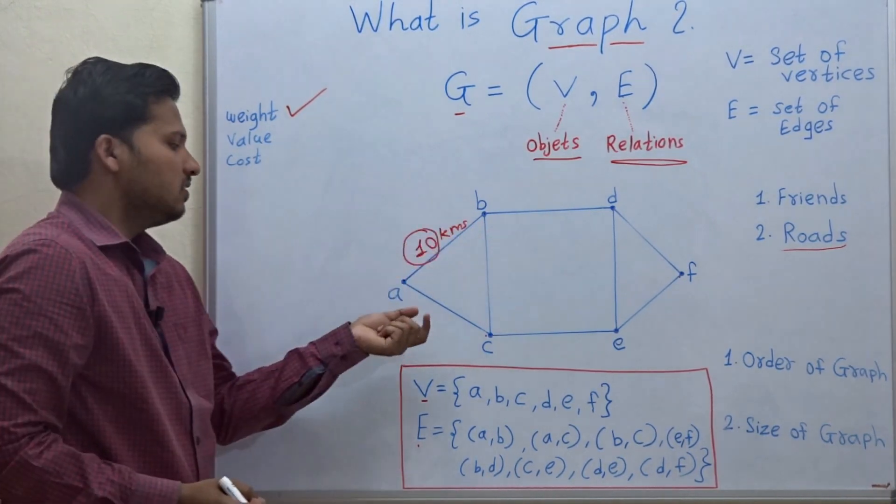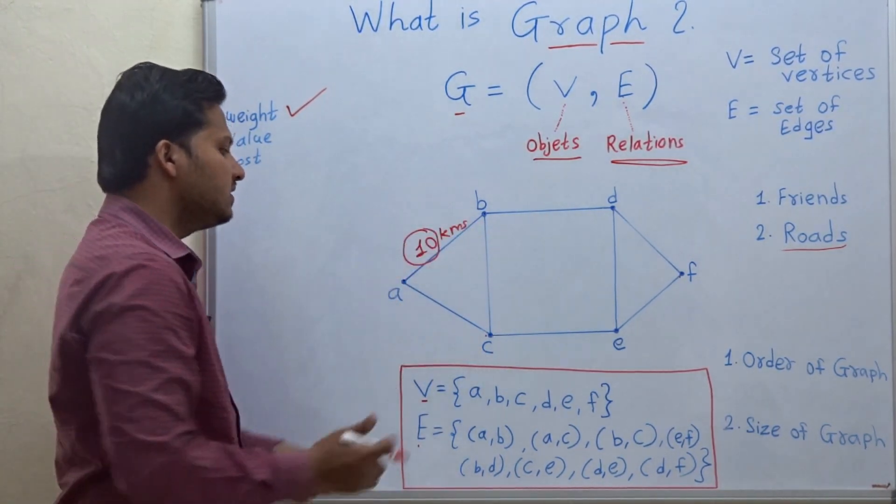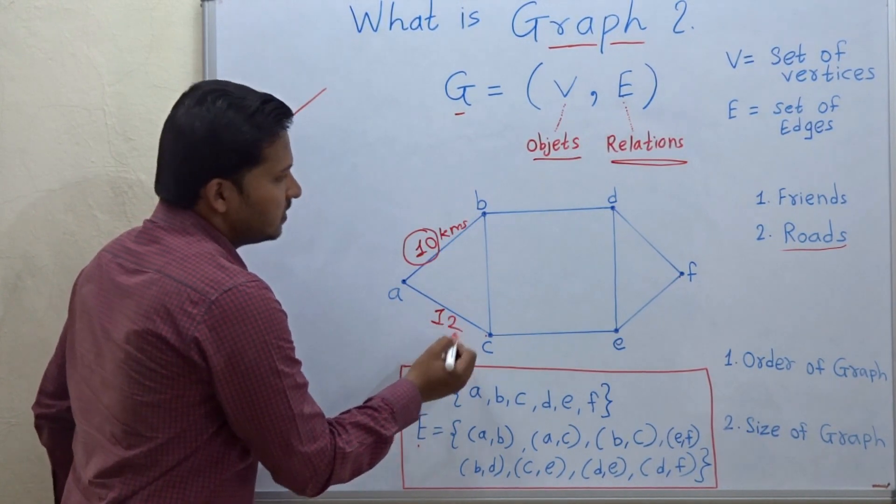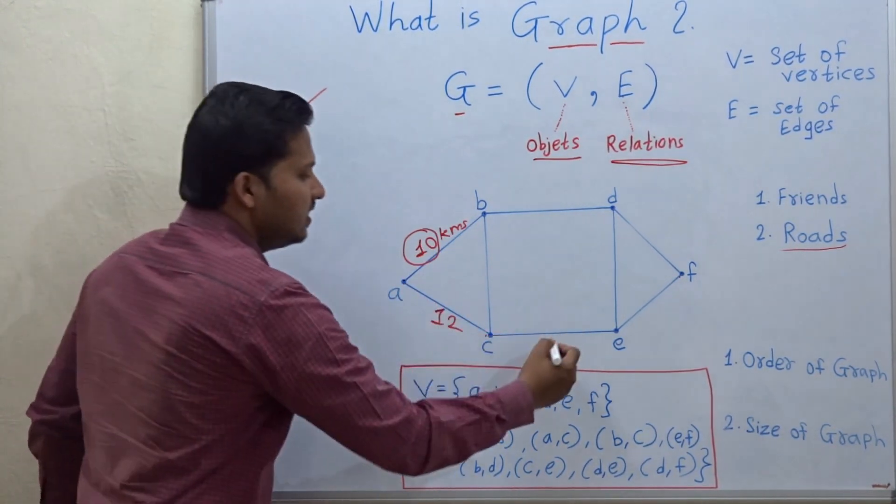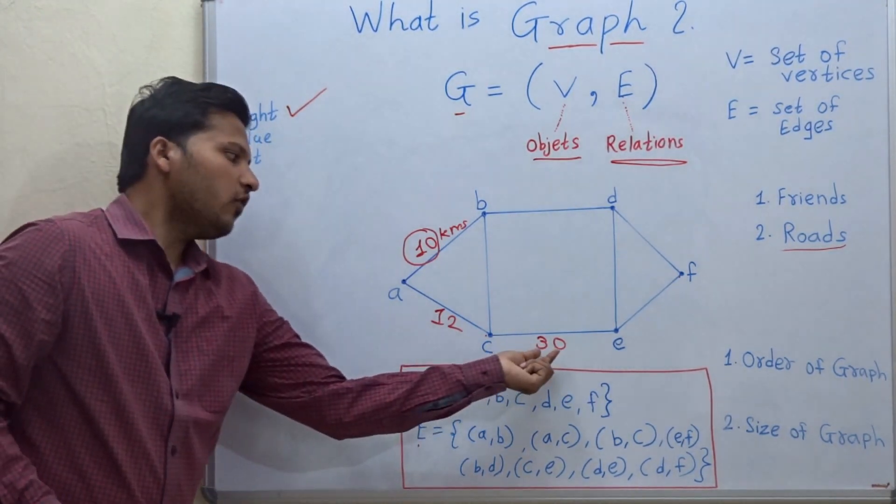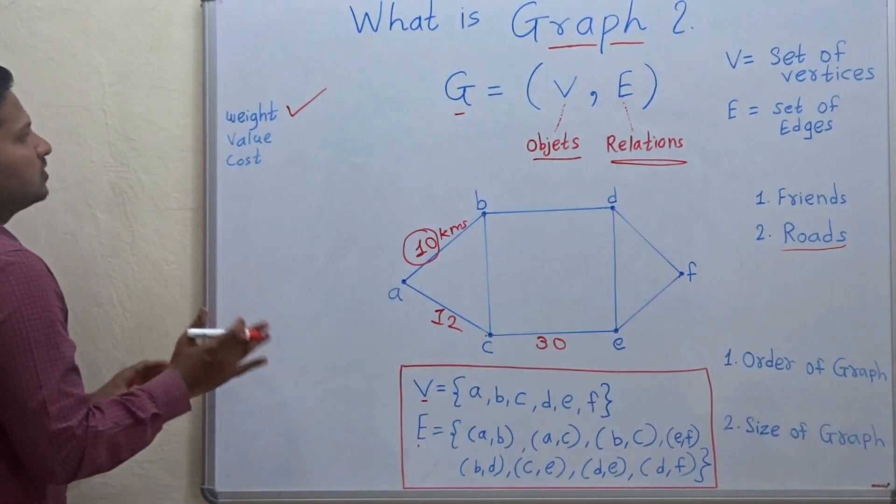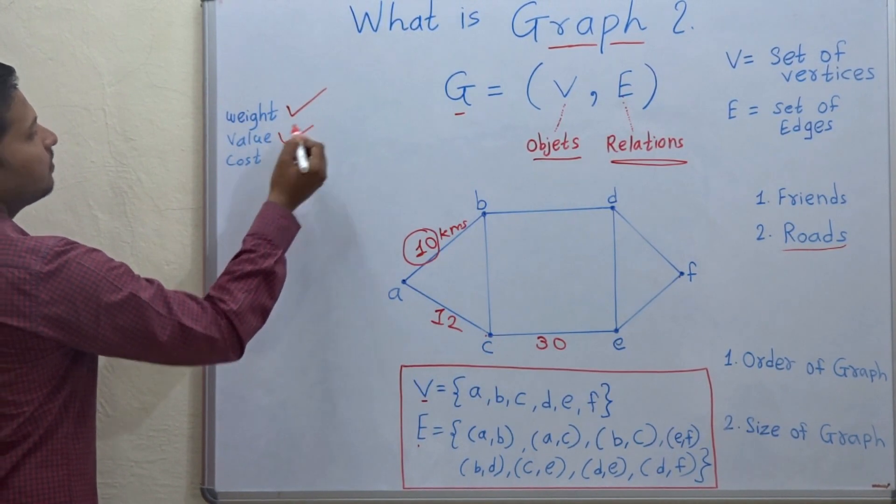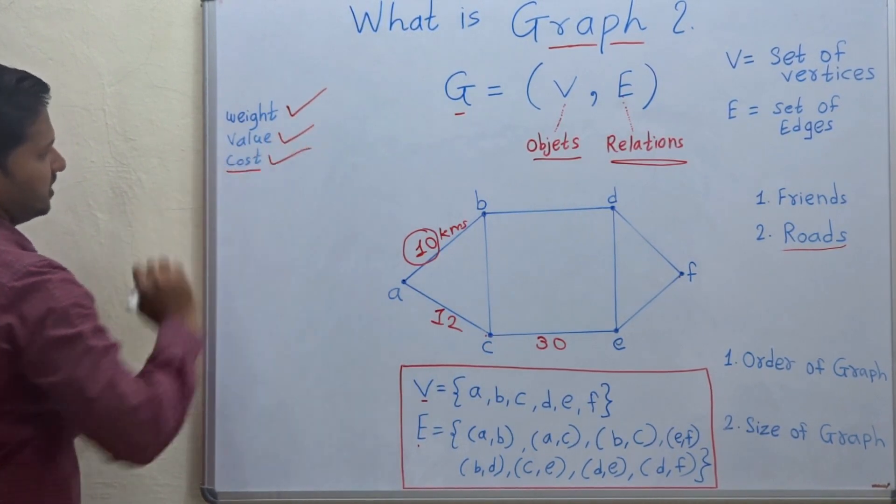You can say that the weight of this edge is 10. Then suppose the value for a, c is 12. Then the value for c, e is 30. So this is the weight for those edges. The edge may be associated with some weight, some value or some cost.